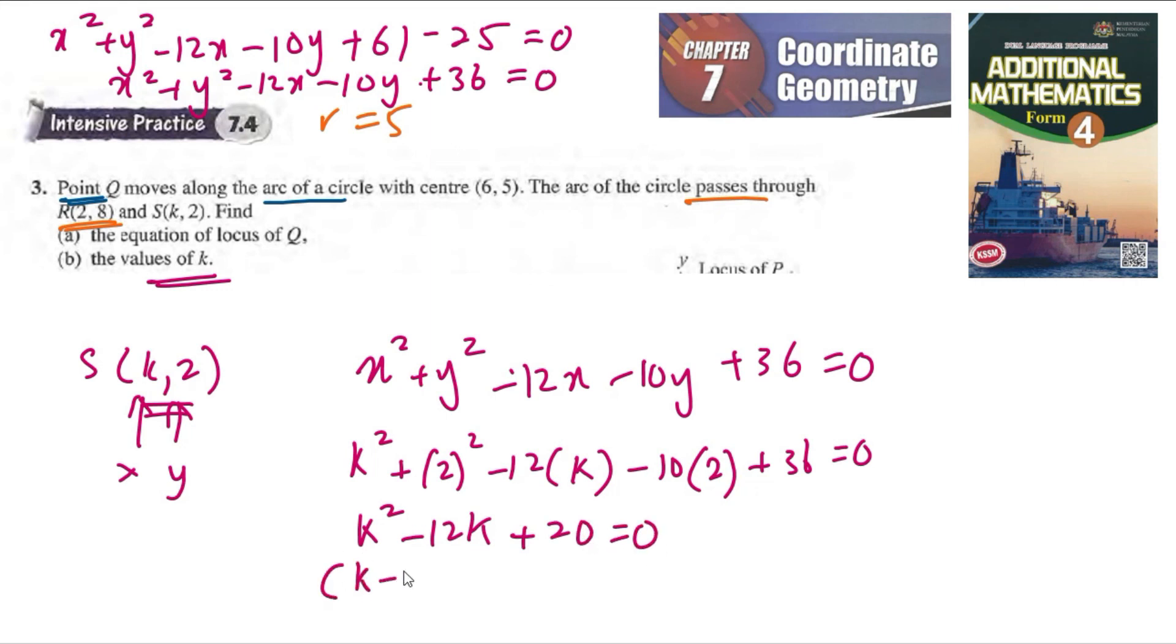So (k-2) and then (k-10) is equal to 0. So k is equal to 2 and 10. The values of k is equal to 10.